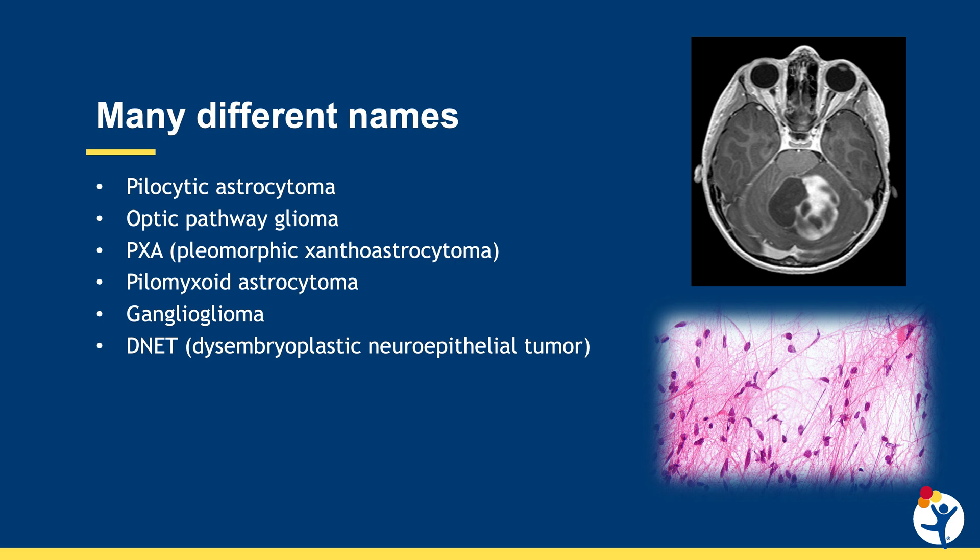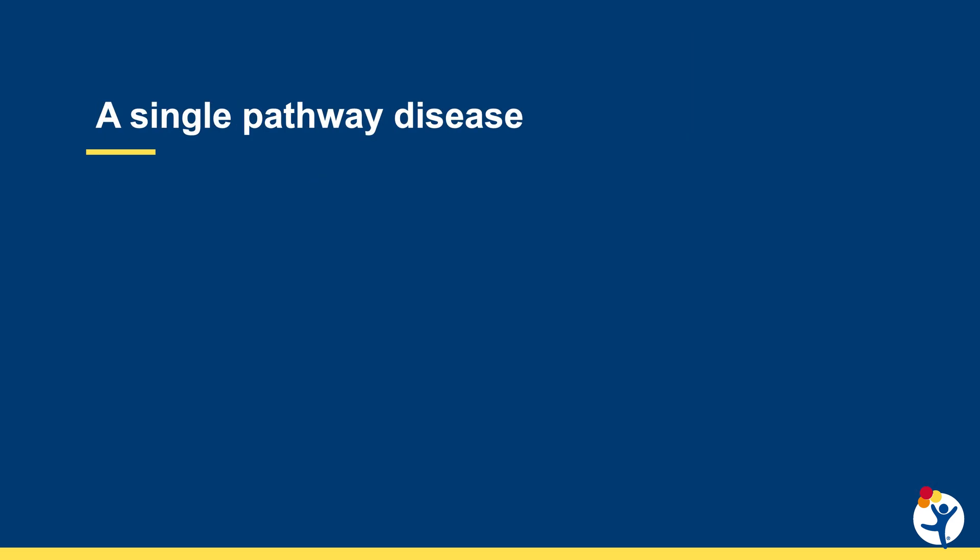All of these tumors present in different ways, but fall into the same pathway. With all of the research that's been done on low-grade gliomas, we now understand that this kind of tumor is a single pathway disease. What that means is that there's one pathway that's driving all of these tumors. To explain that, I want to start with an explanation of the pathway itself.